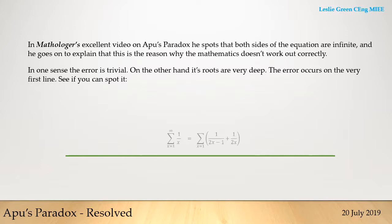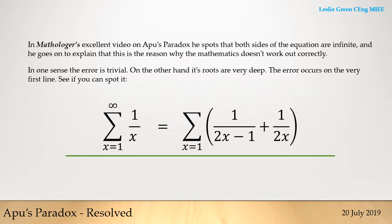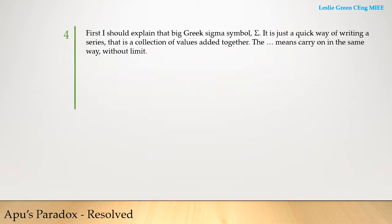The real error comes from the first line of the workings. But it is not that the infinity symbol has been missed out from the big sigma. This infinity is often assumed anyway.